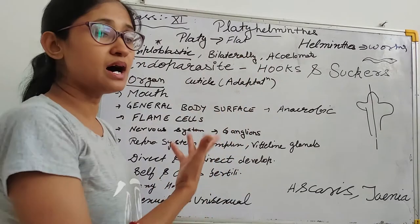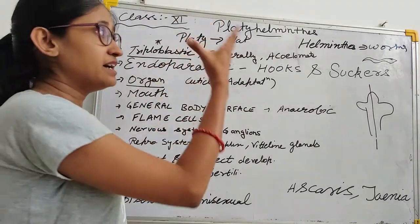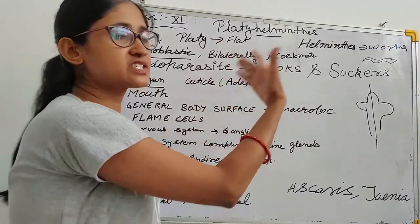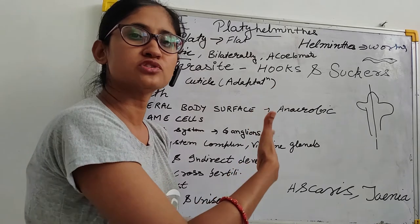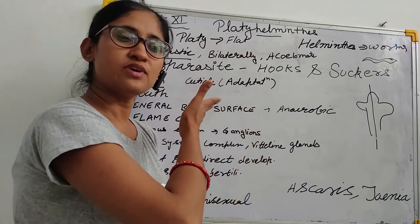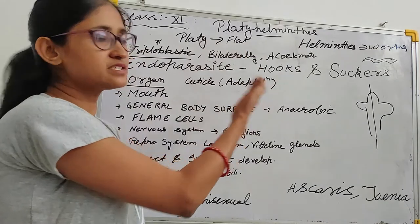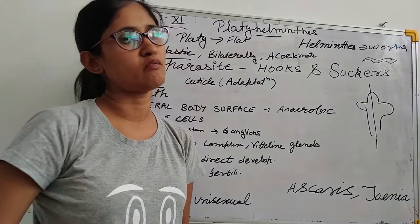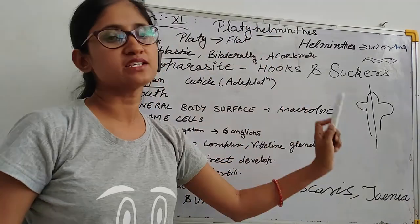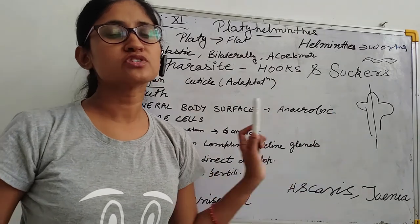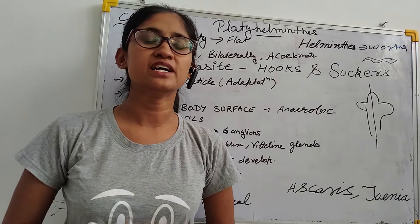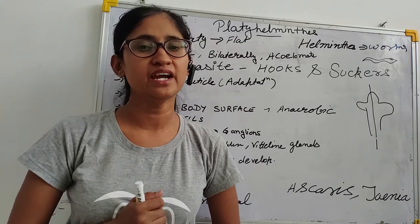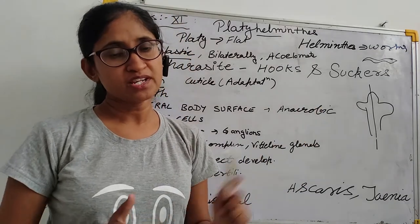The next important thing is coelom. In this phyla, you will study that this is acoelomate — there is no true coelom. The next phyla is pseudocoelomate. True coelom is present when the body cavity is lined by mesoderm.